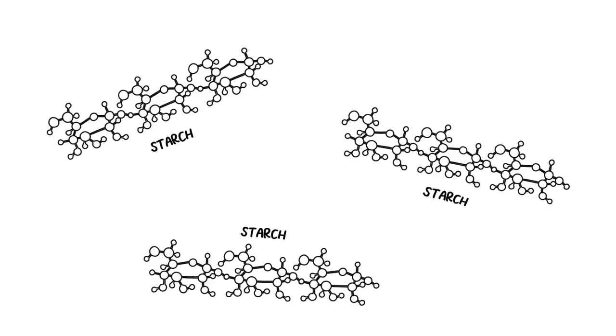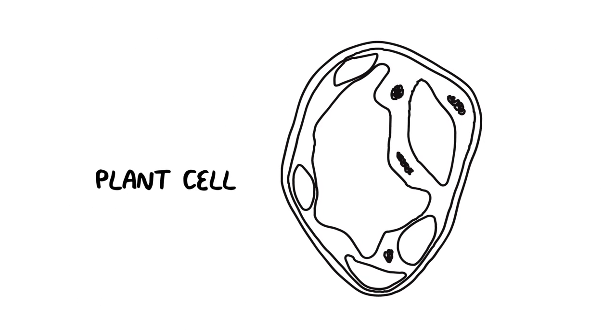But unlike the starch, which is easily accessible in the corn kernels, cellulose is located in the plant cell wall and is much harder to access.